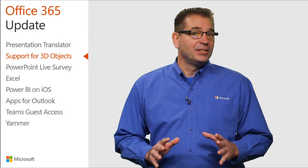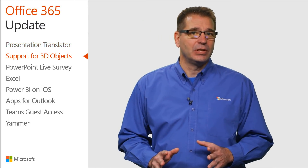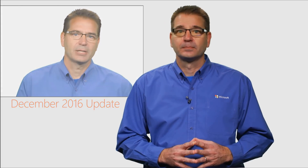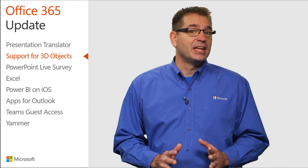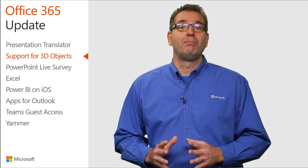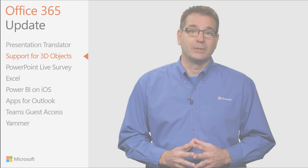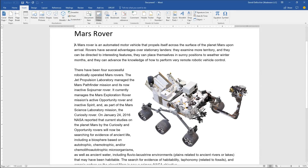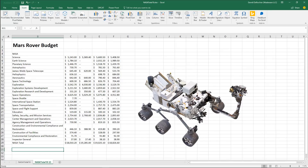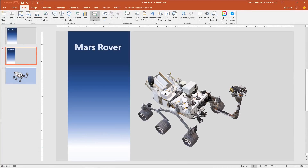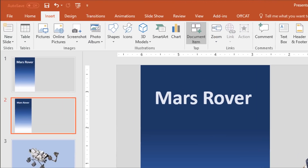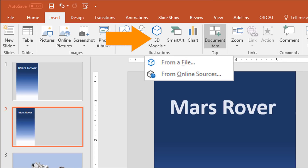Back in the December 2016 update video, I made this prophetic statement: one upcoming enhancement I'm looking forward to is the support for three-dimensional objects. That day has finally arrived, and it's even better than I expected. You can insert 3D objects in Word, Excel, and PowerPoint the same way you add traditional graphics, via a button on the Insert ribbon.